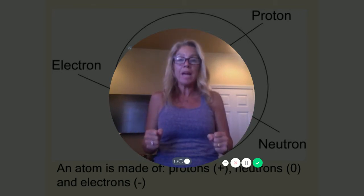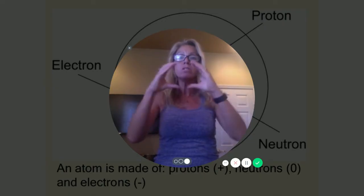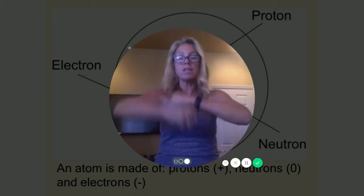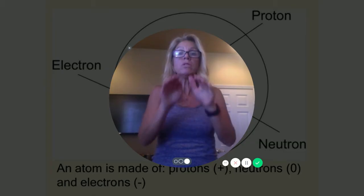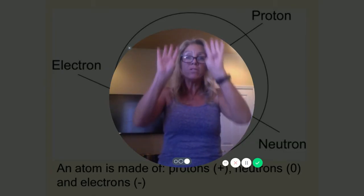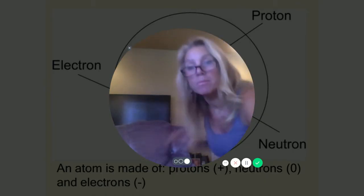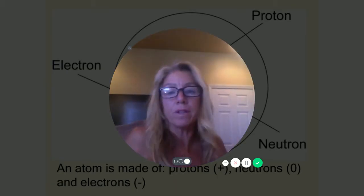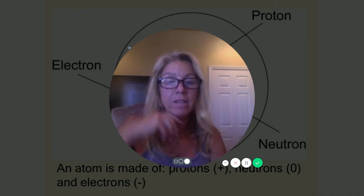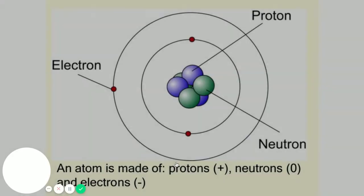One more time: atoms are made out of protons, neutrons, and electrons. The protons and the neutrons are in the nucleus — atomic mass. The electrons are in energy levels, always moving around. Lowest energy level holds 2: 2, 8, 18, 32. Eight is great — octet rule. Atoms become stable by filling their outermost energy level or by filling it to eight, referring to the octet rule.